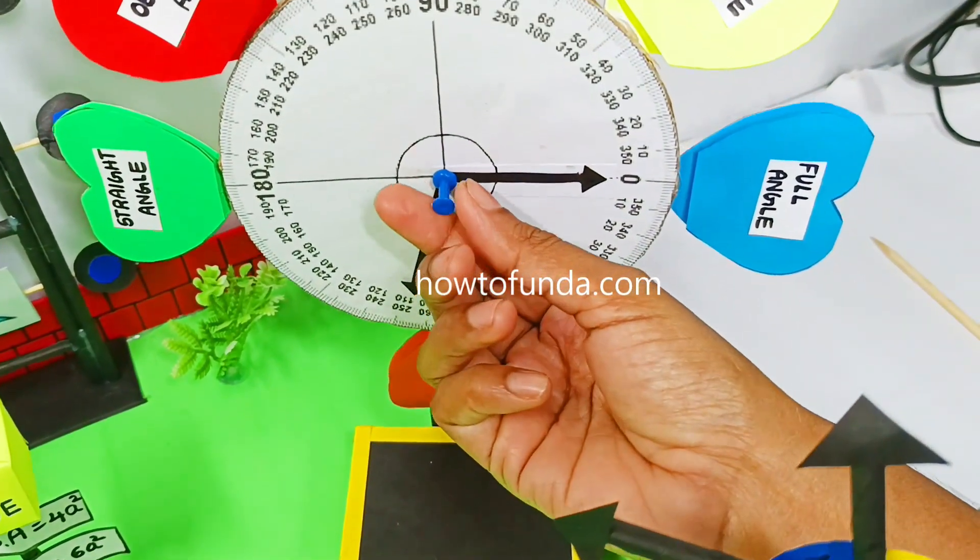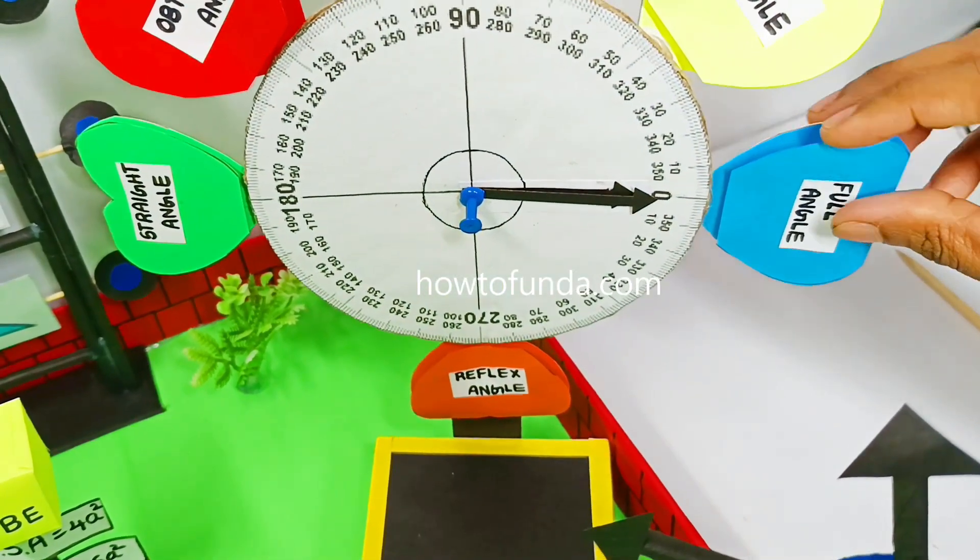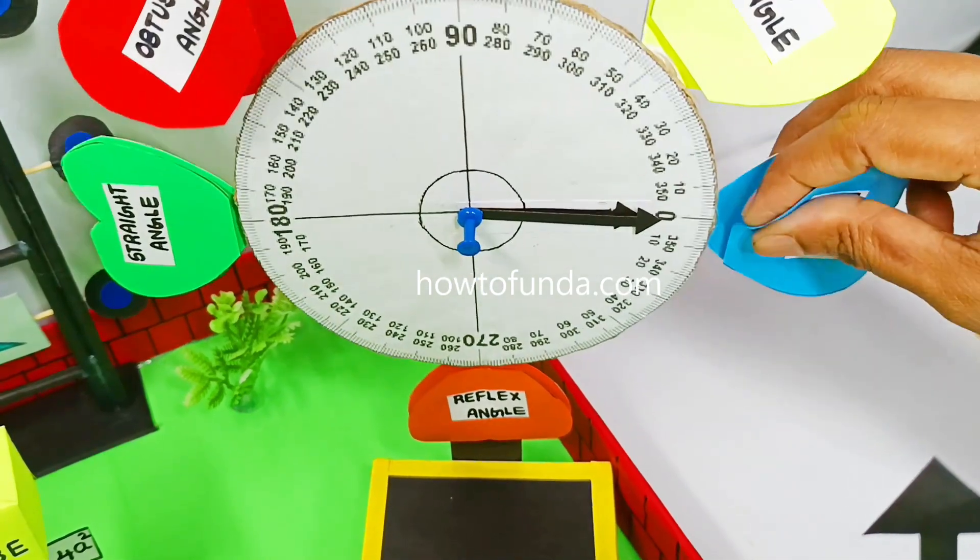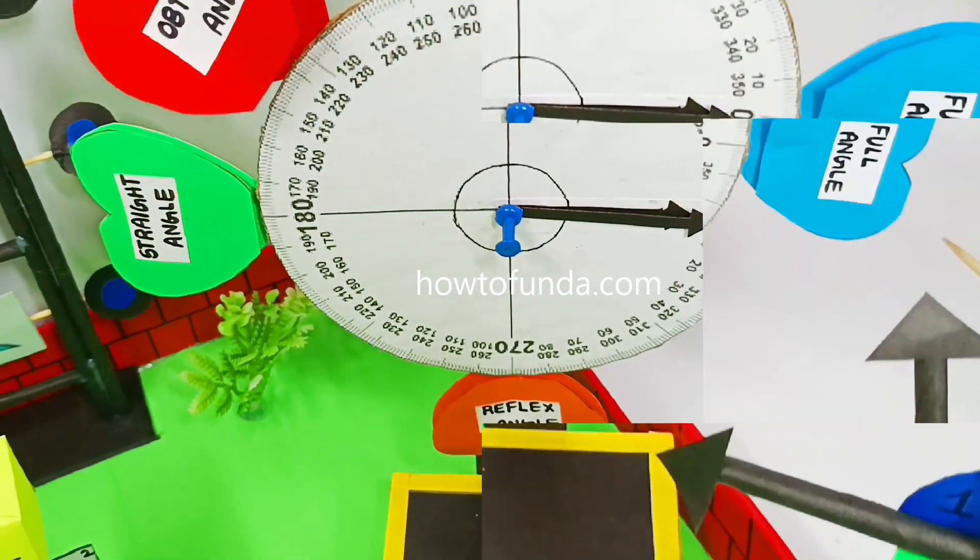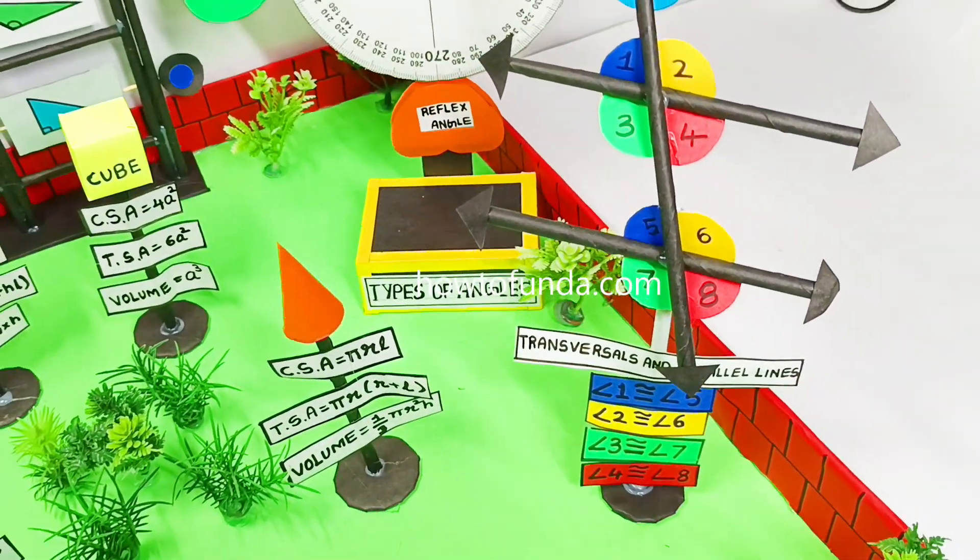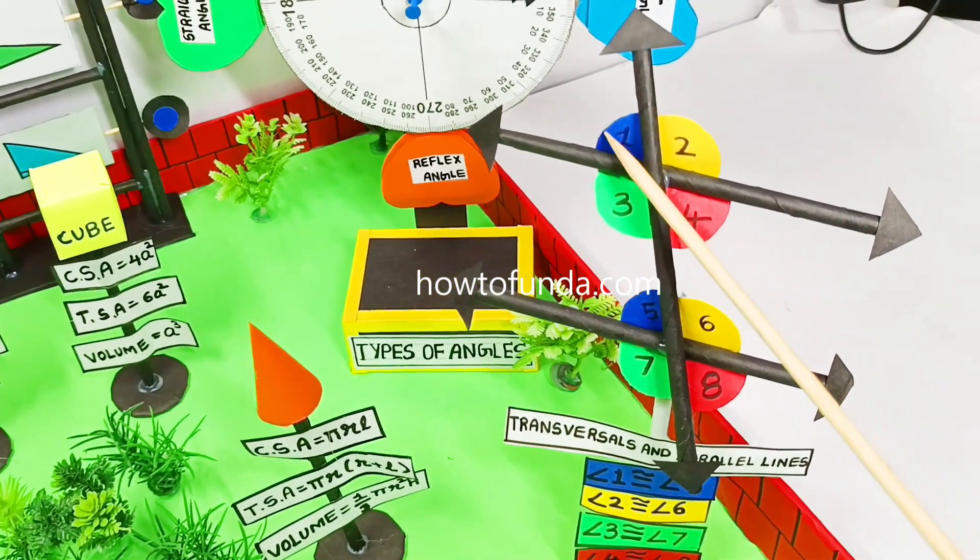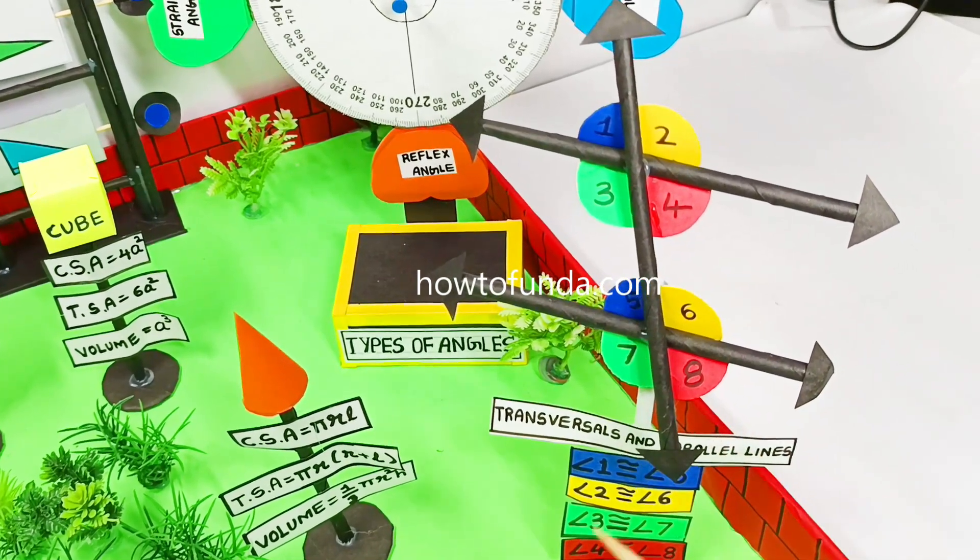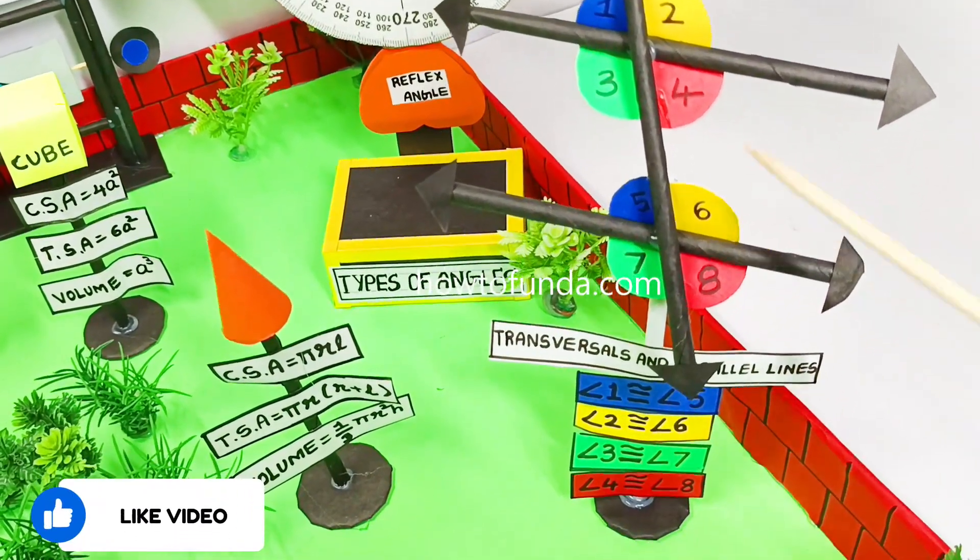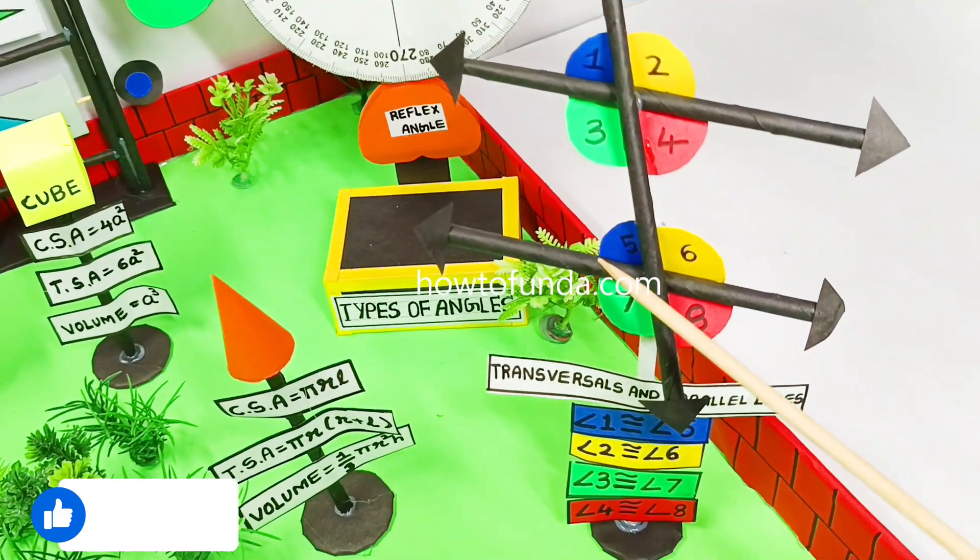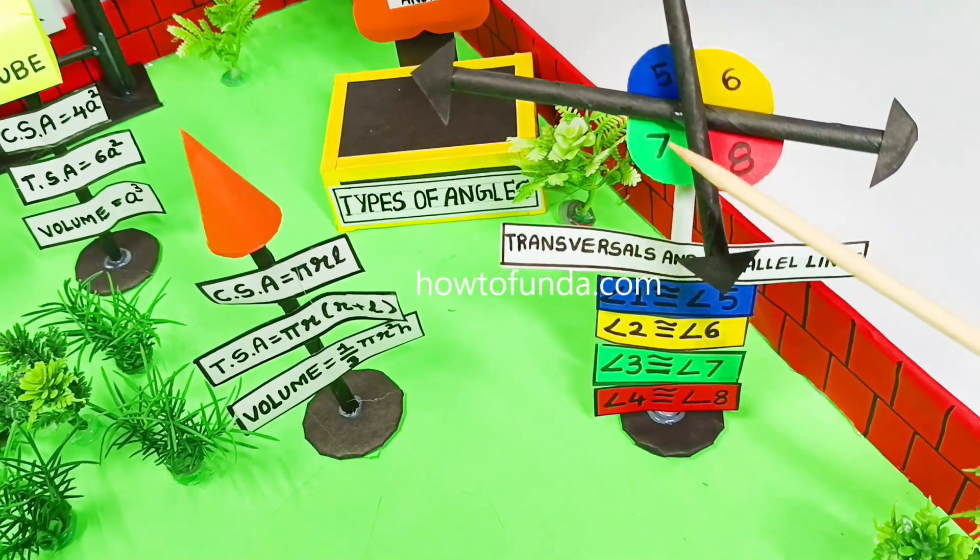The next item we depicted in the park is traversals and parallel lines. We depicted the parallel lines with the appropriate angles in it. If you can see, the first one is shown, and we have given the proportions of the traversal as well.